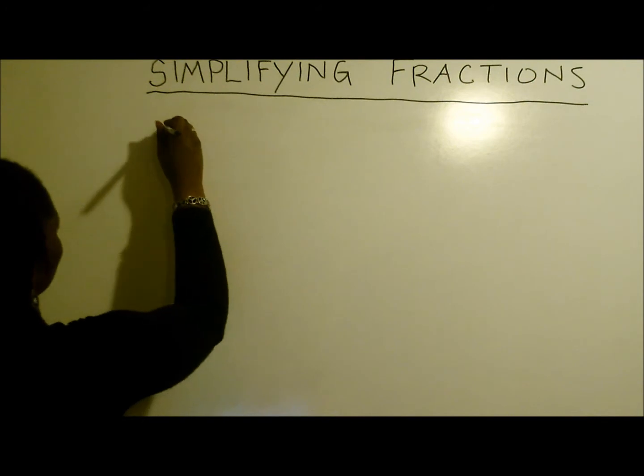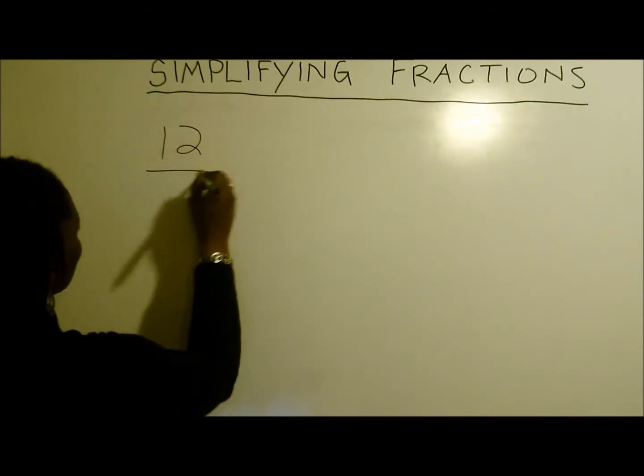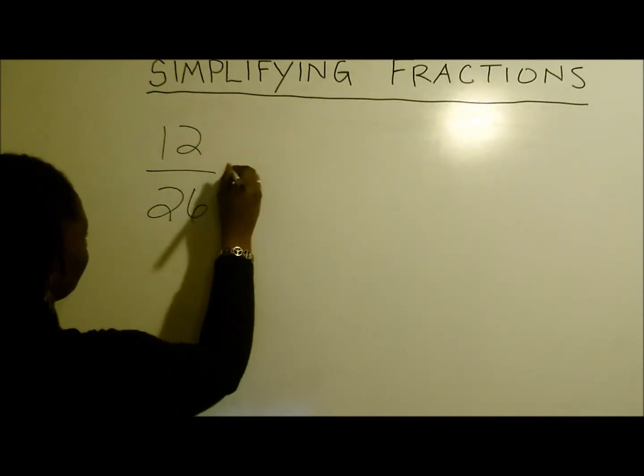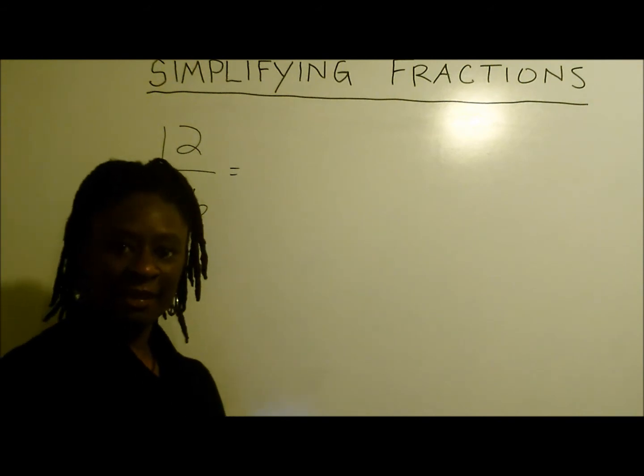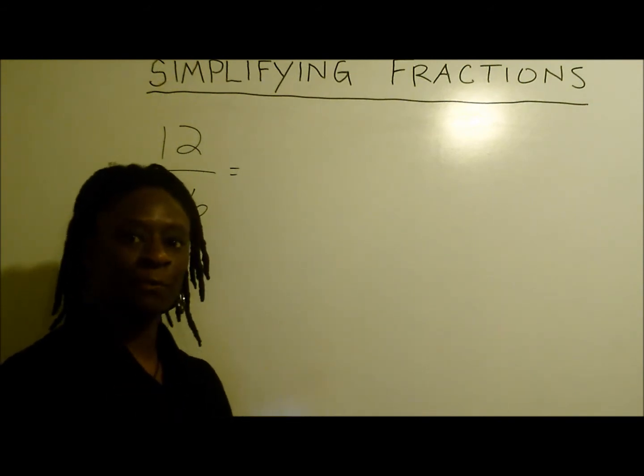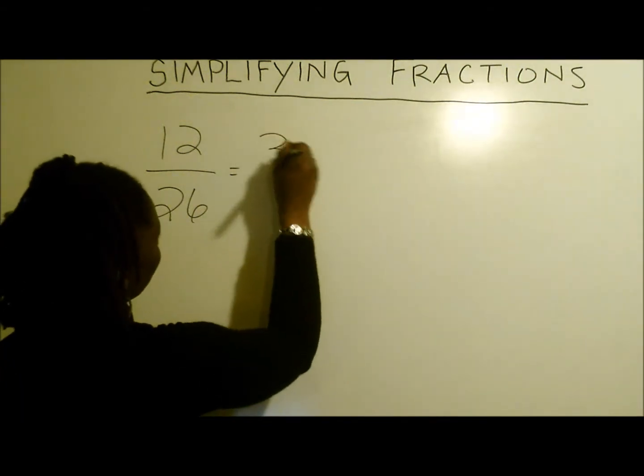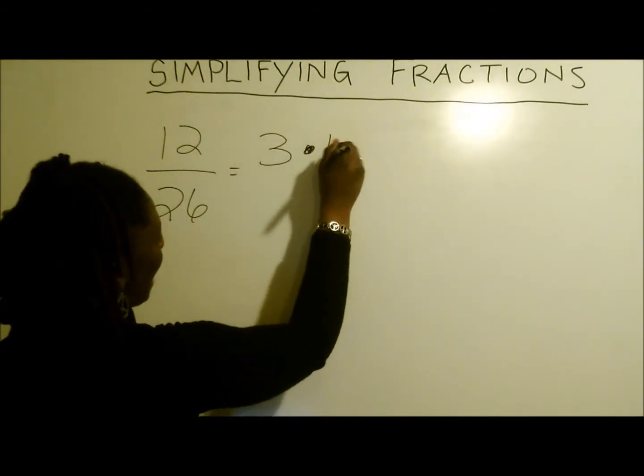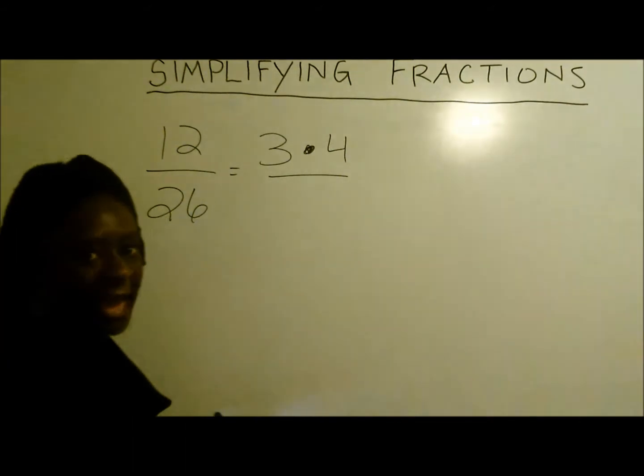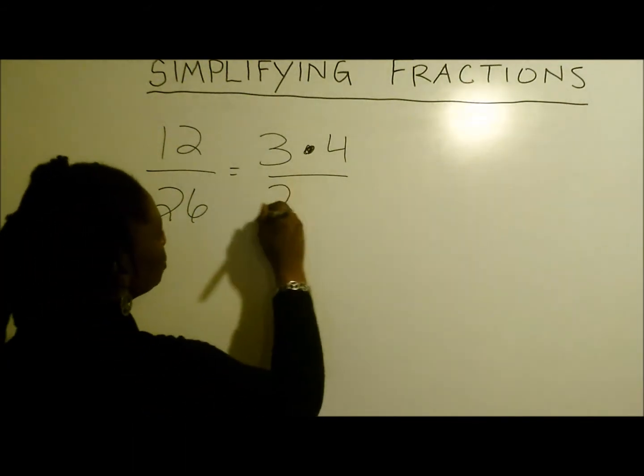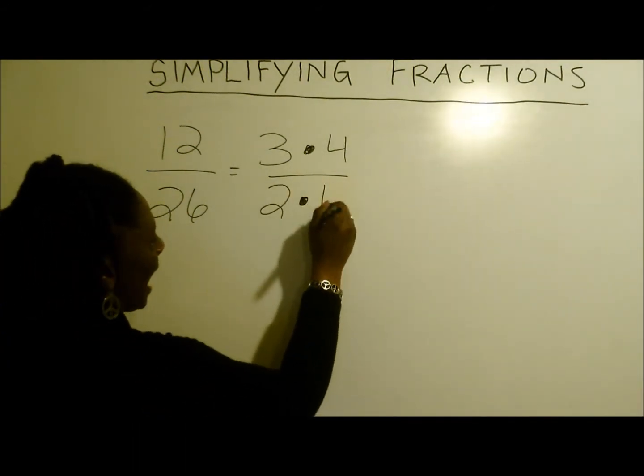This time we'll take 12 over 26. Now just like before, we simply have to break these numbers down. So for 12, we get 3 times 4. And 26 will give us 2 times 13.